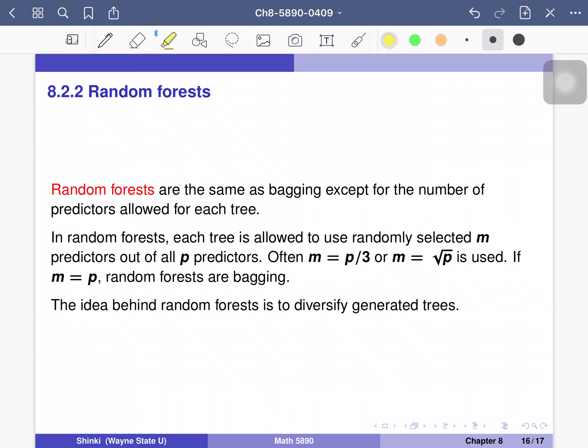So in random forests, each tree is allowed to use randomly selected m predictors out of all p predictors. So often, m is just a third of p or a square root of p.